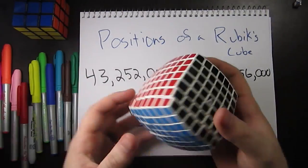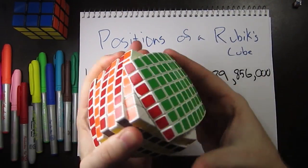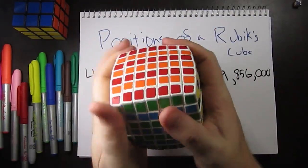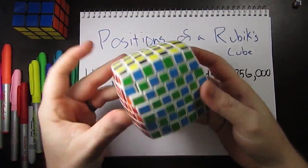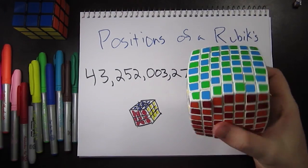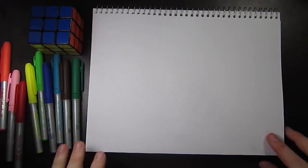Many people asked about the V Cube 7. They wanted to know how many more positions are in a 7x7. Well let's compare the two. First, we'll start with a Rubik's Cube.